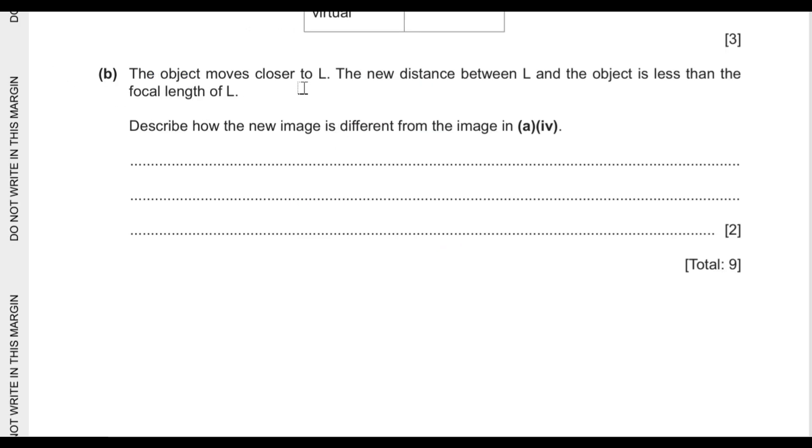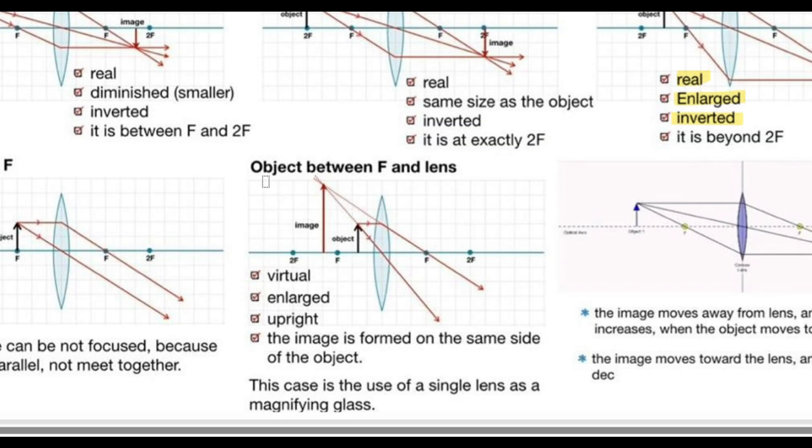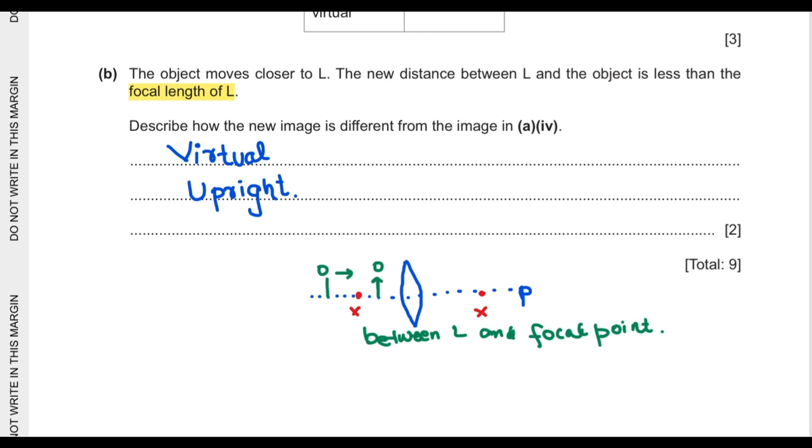Part B says the object moves closer to L. The new distance between L and the object is less than the focal length of the lens. Describe how the new image is different from the image produced in A. Previously the object was beyond the focal point, and now the object is between the focal point and the lens. The image produced is not by actual meeting of the rays but they appear to meet in front of the lens. So the new image is virtual, enlarged, and upright.